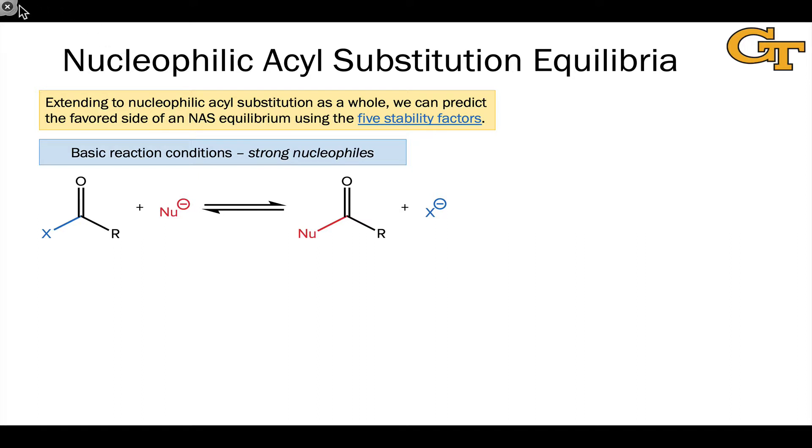For example, when we use a strong nucleophile under basic conditions, on the reactant side we have the anionic nucleophile. On the product side, we have a new anion, the conjugate base of the leaving group, x-minus. The key to determining the favored side is which of these two is more stable using one of the five stability factors. If x-minus is more stable than nu-minus, if x is a good leaving group relative to nu, the reaction will go forward spontaneously.